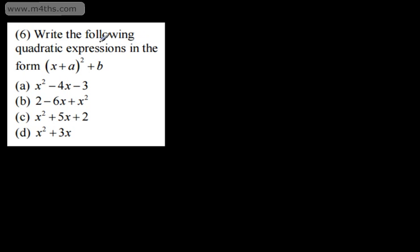In question 6, we're asked to write quadratic expressions in the form (x+a)²+b. We use this form when the coefficient of the x² term is 1. We can only complete the square when the coefficient of x² is 1. If not, we need to factor it out — for example, if we had 3x² we'd factor the 3 out, or if we had negative x² we'd factor the negative out.